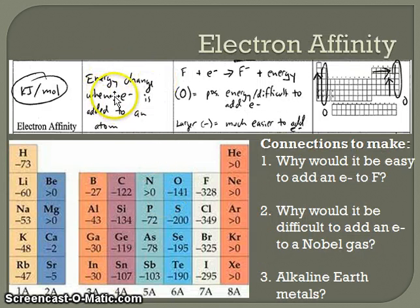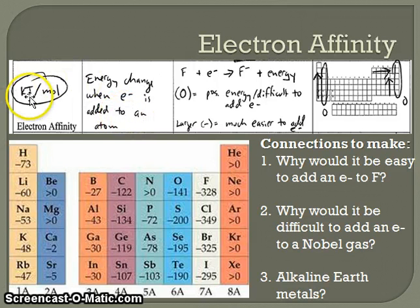Electron affinity is something which measures the energy change when an electron is added to an atom, again measured in kilojoules per mole. An example of this: fluorine having an electron added to it is going to produce a fluoride negatively charged ion and give off energy. Some of the elements are actually going to be shown as having positive energies, which means that it is very difficult to add electrons to them. We see an example of that with the noble gases.